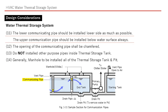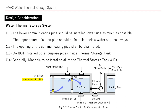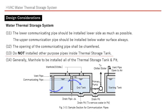The lower communicating pipe should be installed on the lower side as much as possible. The upper communicating pipe should always be installed below the water surface. The opening of the communicating pipe shall be chamfered to make a smooth flow. Do not install other purpose pipes inside the thermal storage tank.